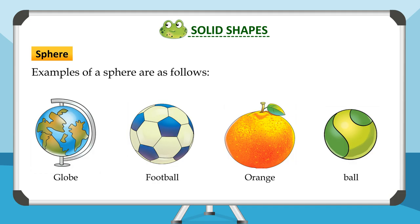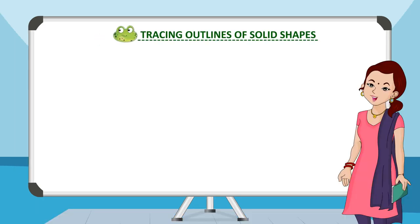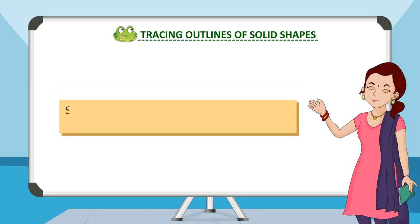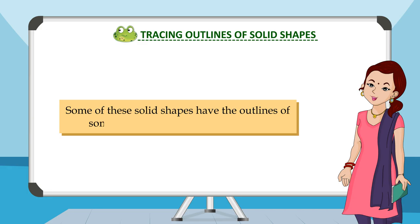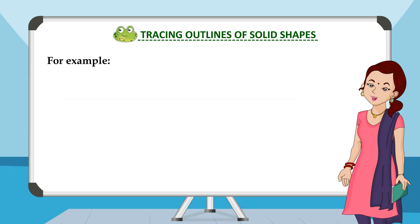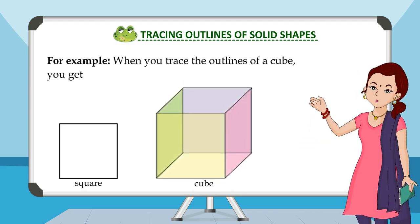Tracing outlines of solid shapes. Some of these solid shapes have the outlines of some 2D shapes that you have learned. For example, when you trace the outlines of a cube, you get the shape of a square.